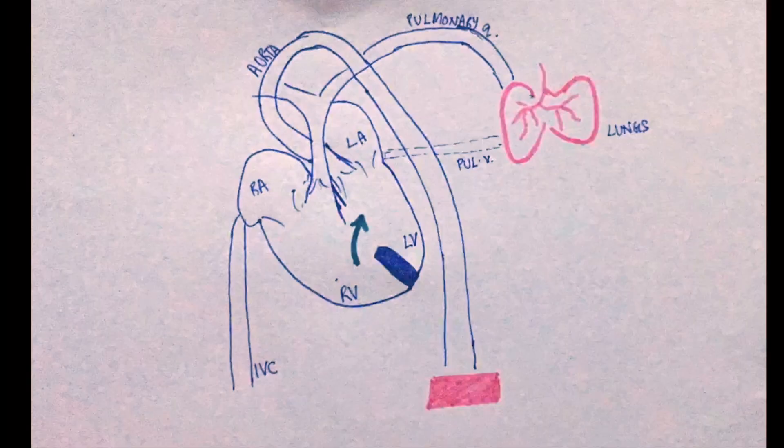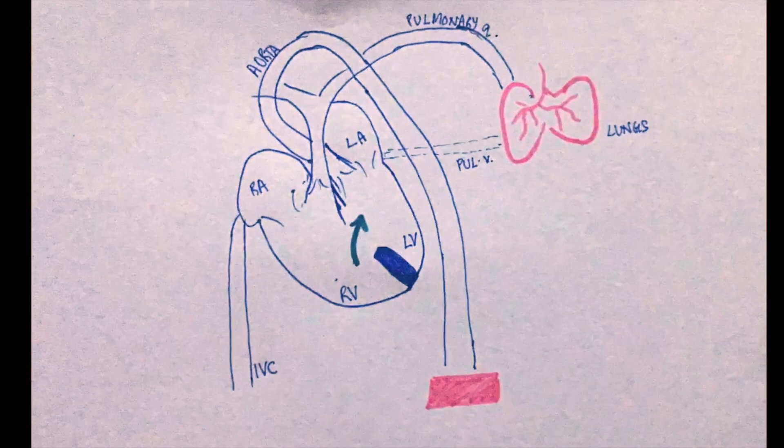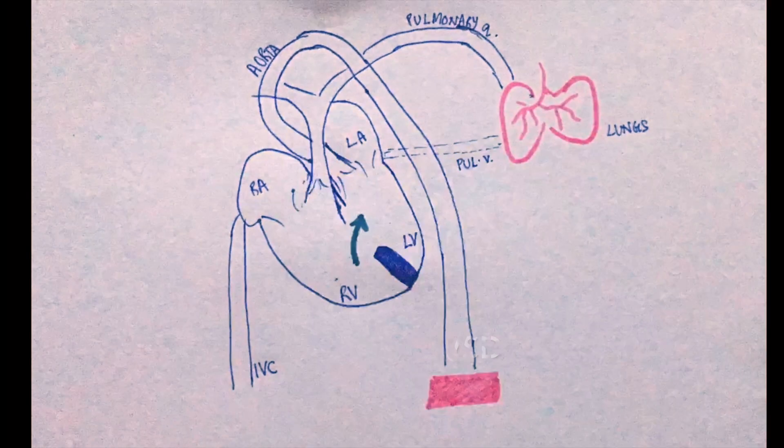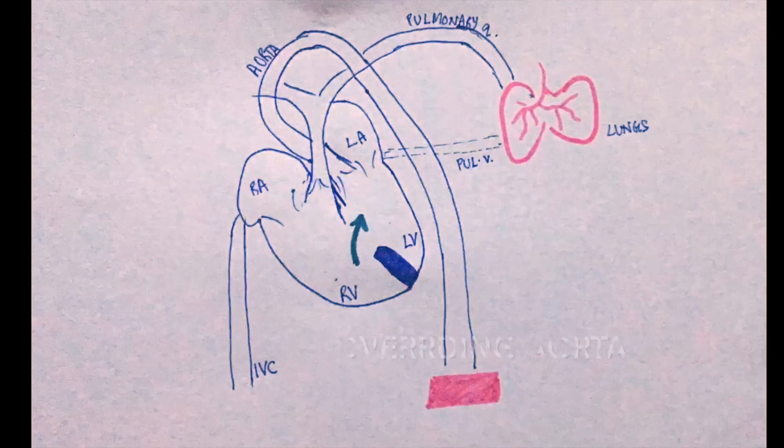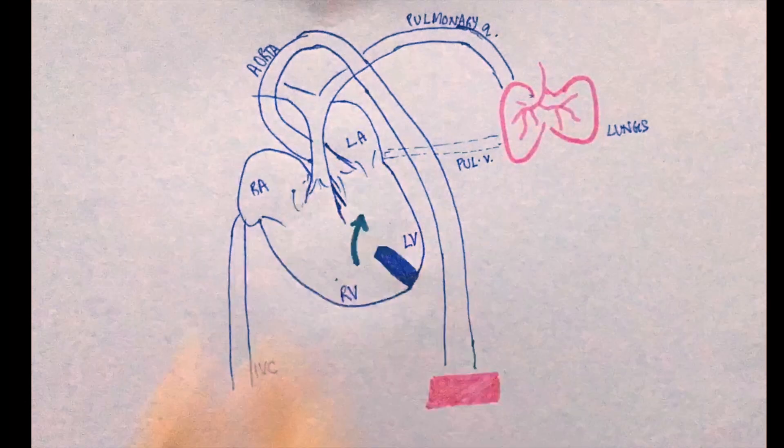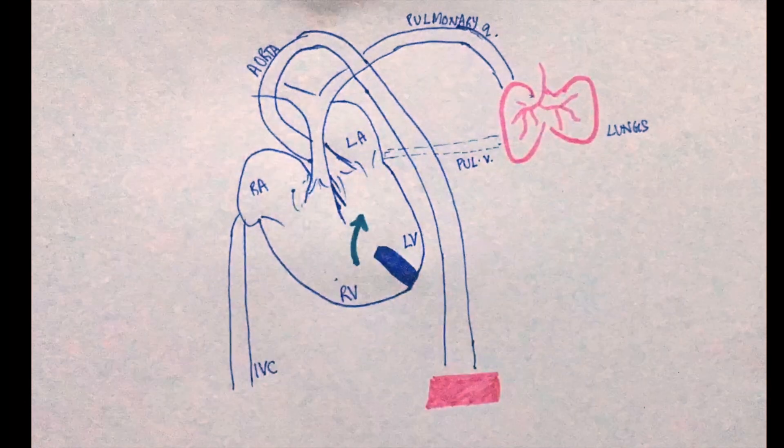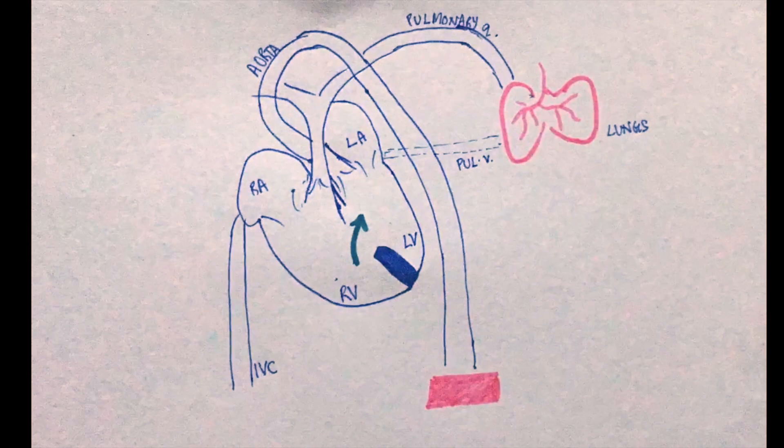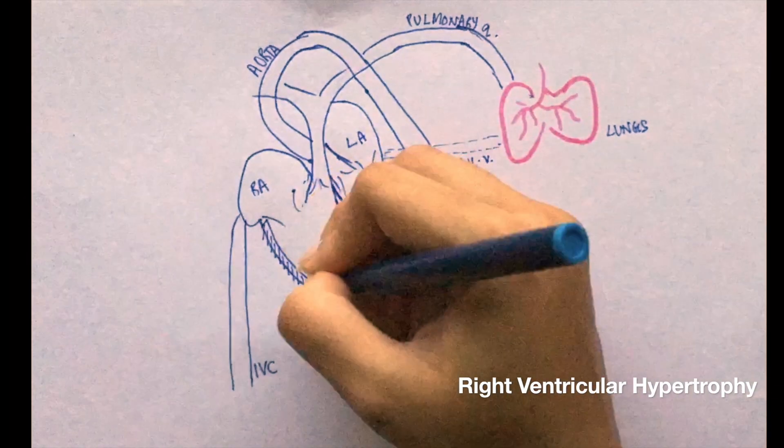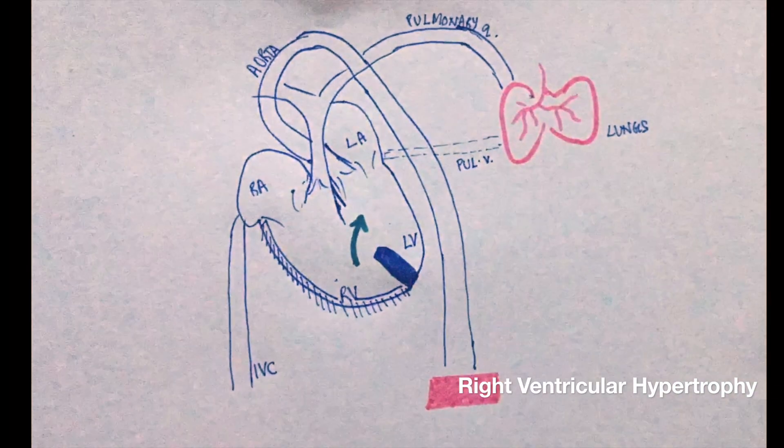If the stenosis here is high, more deoxygenated blood flows through the ventricular septal defect, leading to an overriding aorta. Also, more the stenosis here, greater is the workload on the right ventricle. So, the thickness of the right ventricular wall is also directly related to the degree of stenosis.